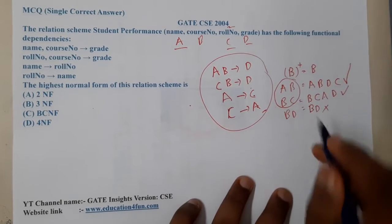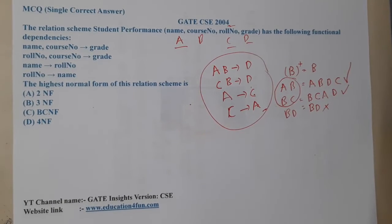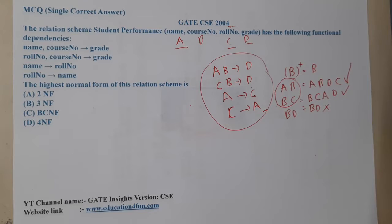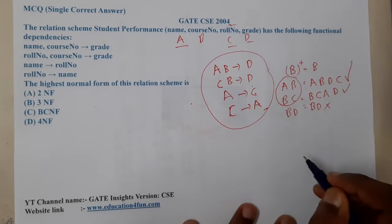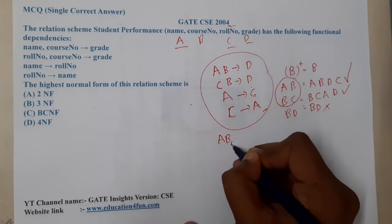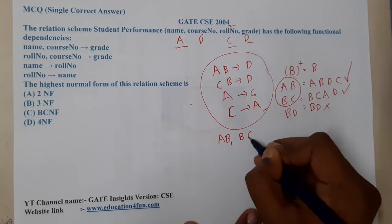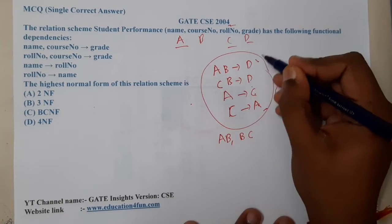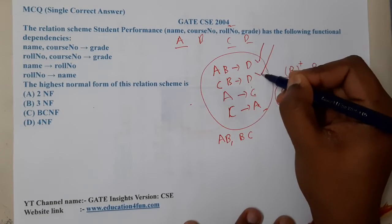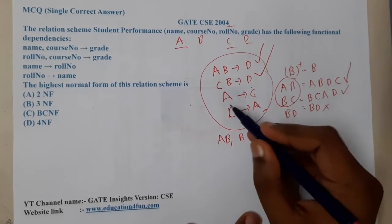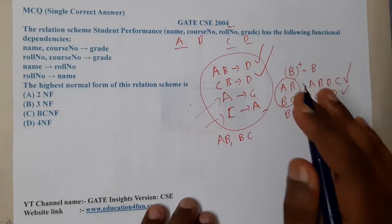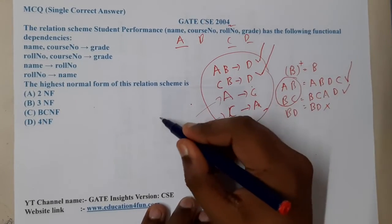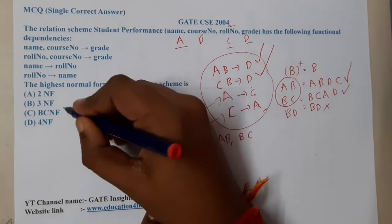So AB and BC are the two candidate keys. Now checking the functional dependencies against BCNF: the first dependency AB → D is in BCNF since AB is a candidate key. The second dependency AB → D is also in BCNF. However, the third and fourth dependencies are not in BCNF. Therefore, this schema does not belong to BCNF, and option C is wrong.